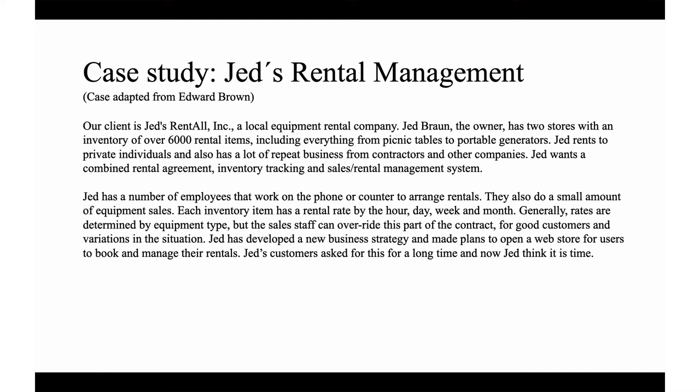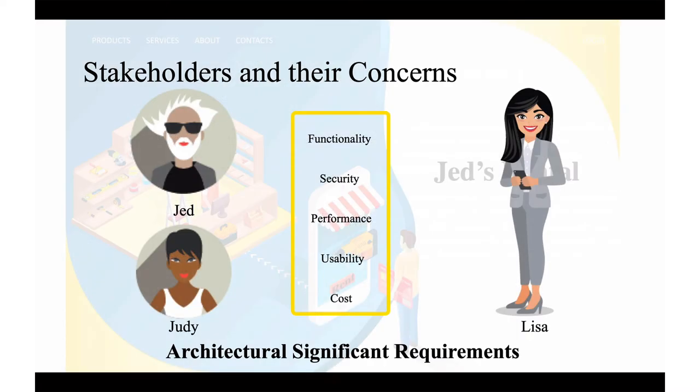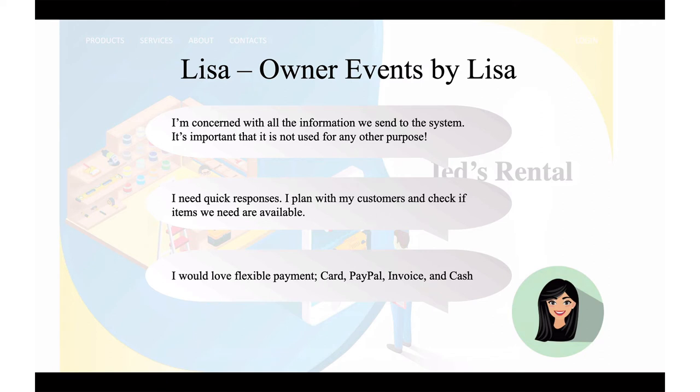If you look at the stakeholders and their concerns, we have Jed and Judy. Judy's running a store, she's a store manager. Jed is the owner. Then we have Lisa, she's one of the customers. Here's some of the architectural significant requirements: functionality, security, performance, usability, and cost. Lisa owns an event company. She has some concerns: quick responses, flexibility, and information security.